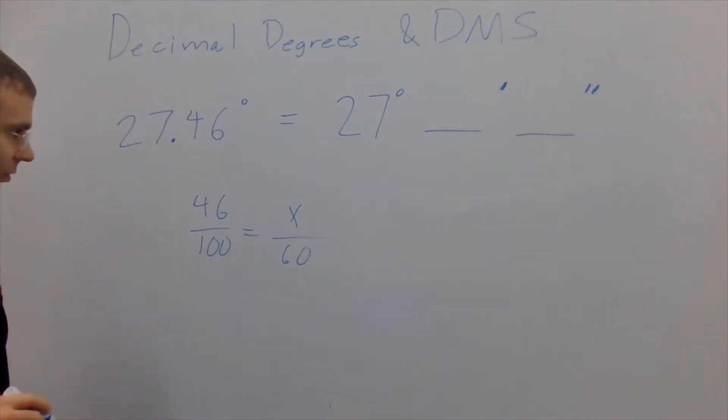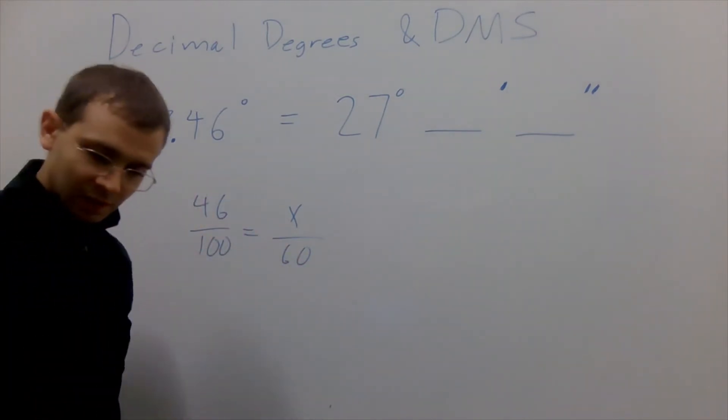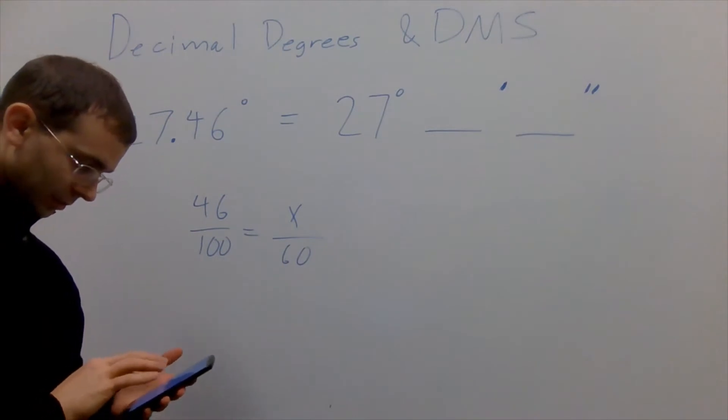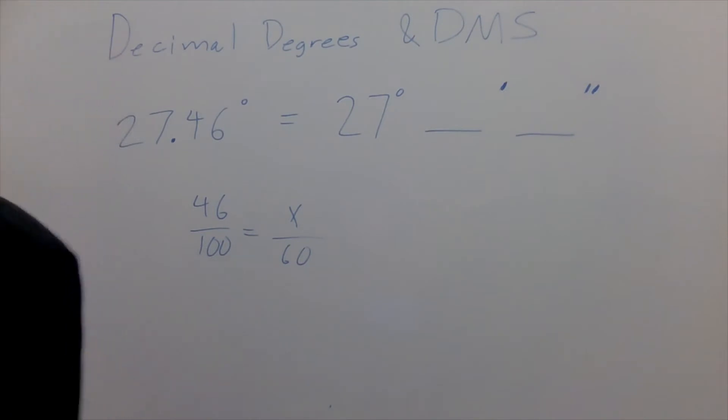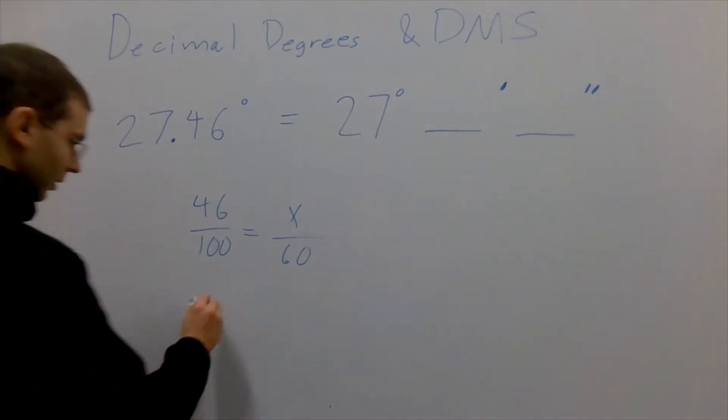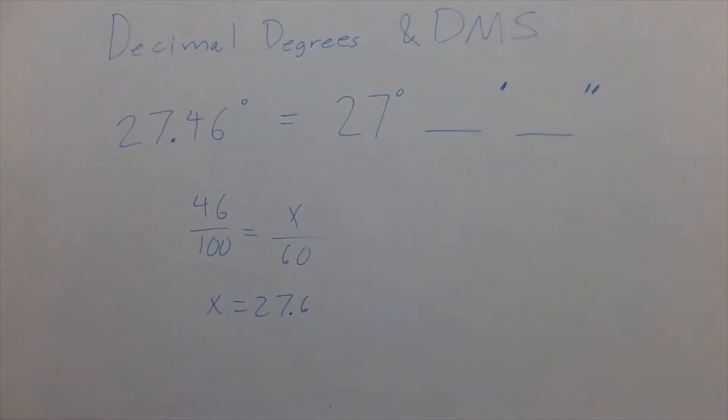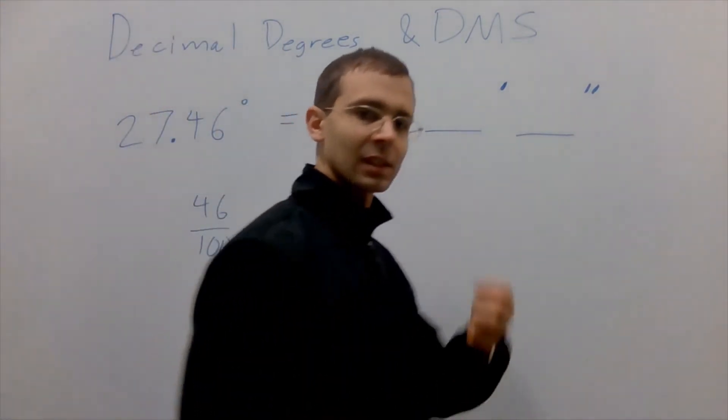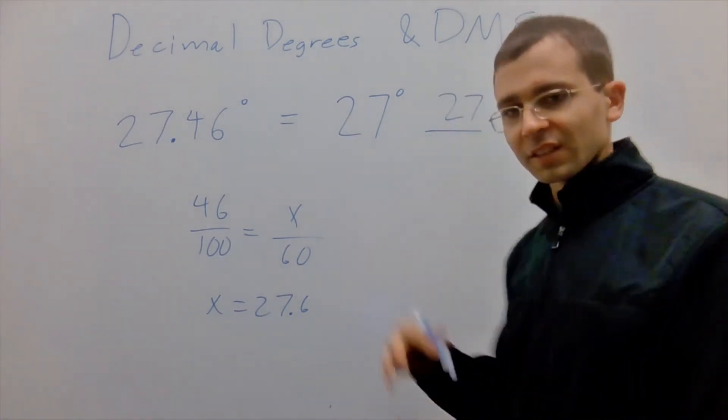To find out how many minutes, in my calculator if I go ahead and multiply both sides of this by 60 I get 27.6. That's interesting - 27 whole minutes and .6 of a minute after that. So we can put our 27 here.